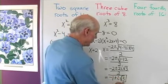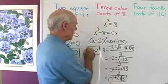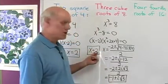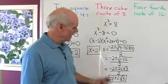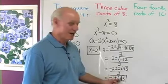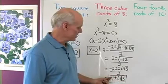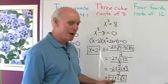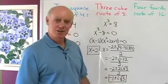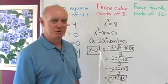So here are the three cube roots of 8: 2, negative 1 plus i square root 3, and negative 1 minus i square root 3. Every number has three cube roots.